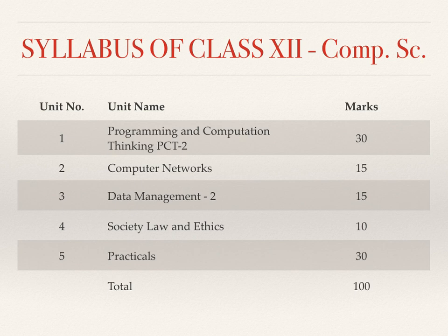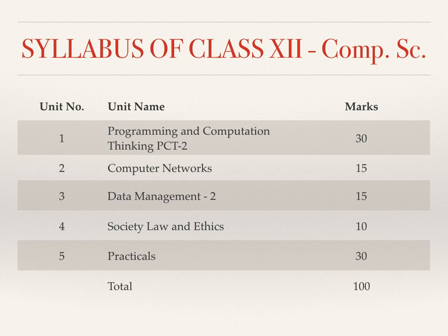Let us jump on to the overall syllabus of Computer Science. The course code is 083. In Class 12 we have a total of four units of theory covering topics like Python programming, computer networks, data management, society, law and ethics — covering 70 marks — and one unit of practical session covering the remaining 30 marks. The detailed split-up of marking can be seen on your screen in the table showing unit number, unit name, and marks.